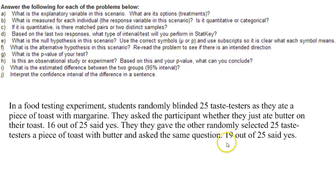We want to see how statistically significant these results really are. Our first question here, part A, says what is the explanatory variable in this scenario and what are the treatments or the options? It looks like we are testing eating a piece of toast with margarine versus eating a piece of toast with actual butter. So really the explanatory variable is what is on your toast, the two options being margarine or butter.